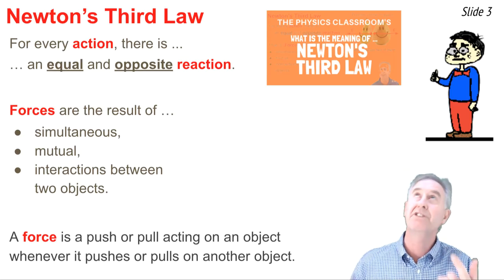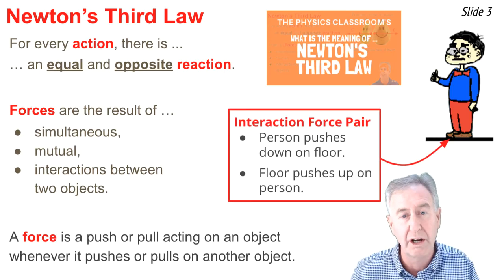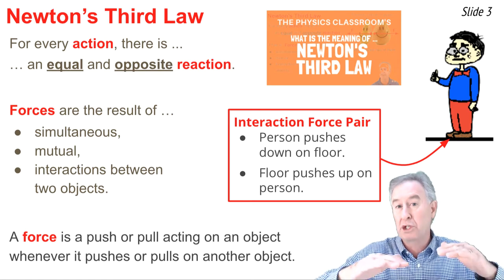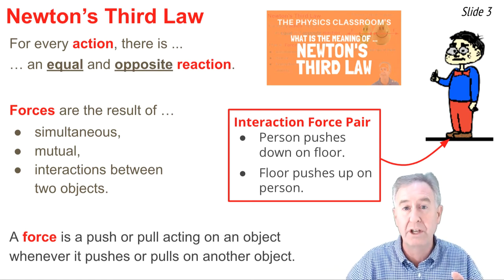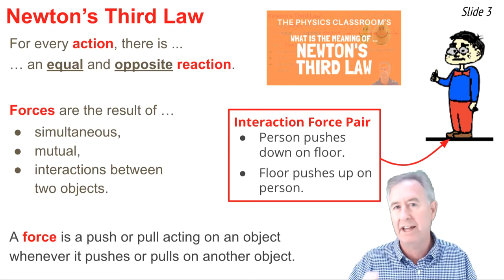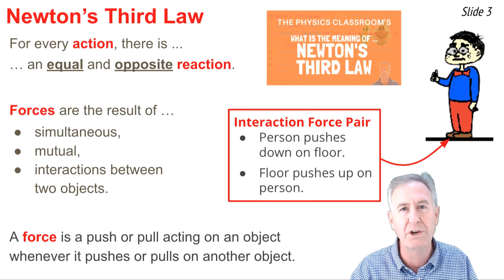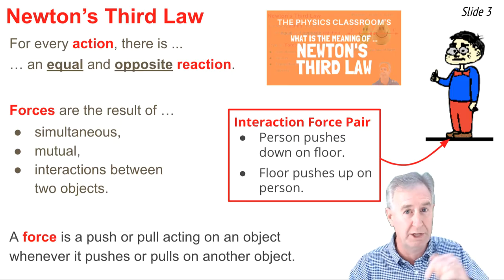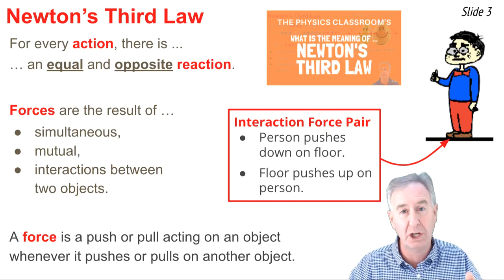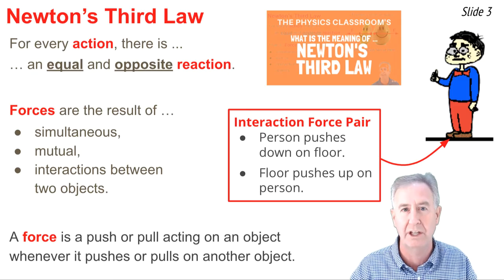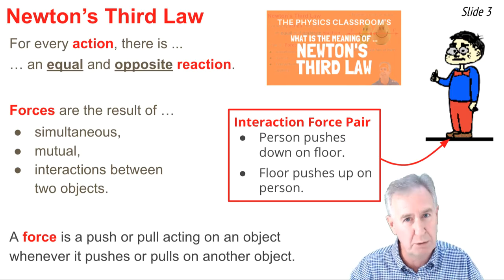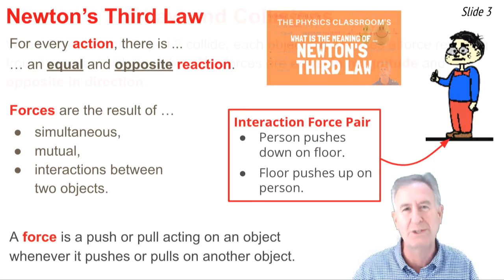To illustrate, consider a person standing on the floor. As the person stands on the floor, the person pushes down on the floor with a force, and the floor pushes up on the person. That's a force pair — a pair of forces, one on the person and one on the floor. They act in opposite directions, they occur simultaneously and mutually as a result of a touching interaction between the two objects. That's Newton's third law.